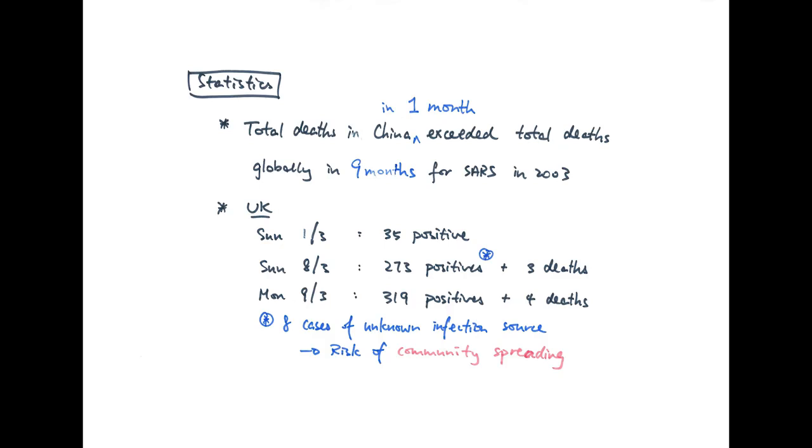Eight of the cases have unknown infection sources, which means that the government cannot trace where these people have contracted the virus from. This means we already have a risk of community spreading, meaning the virus is already circulating among society. You can probably expect the numbers to rise exponentially if that's the case, which is technically what's happening already right now.